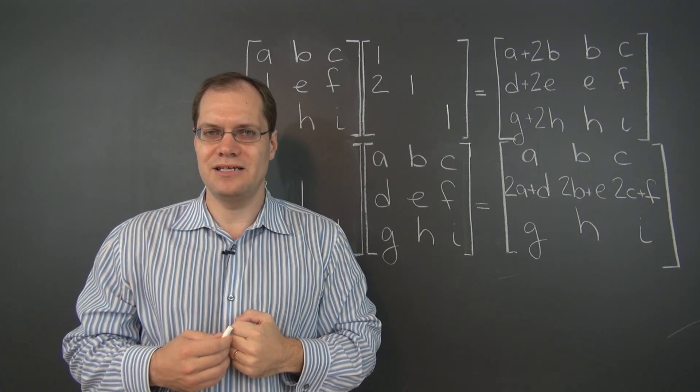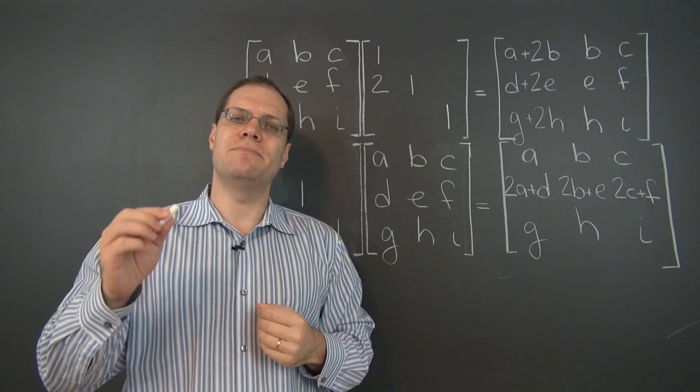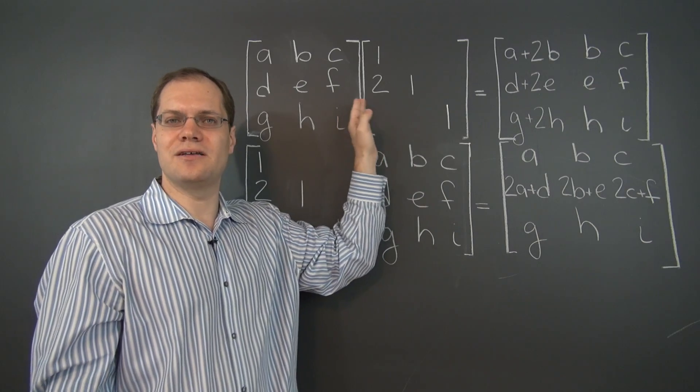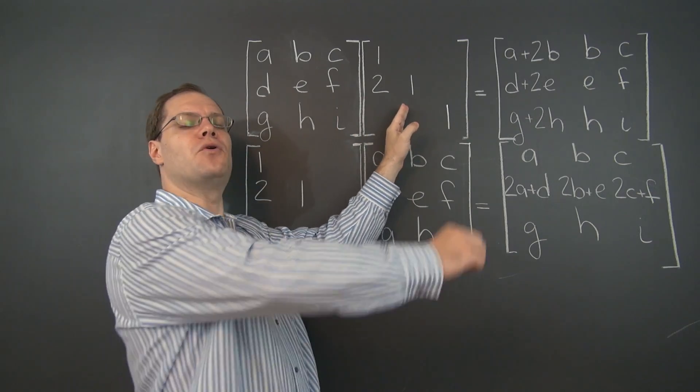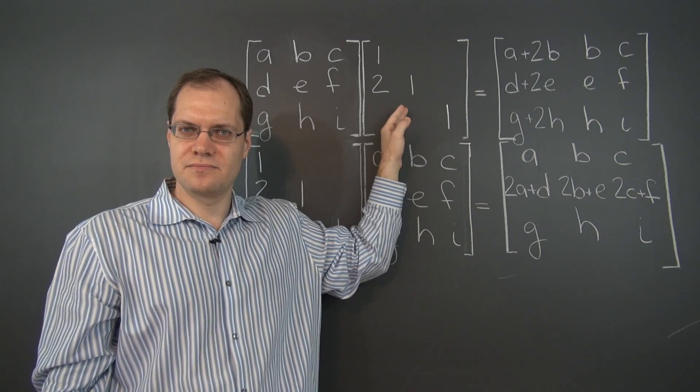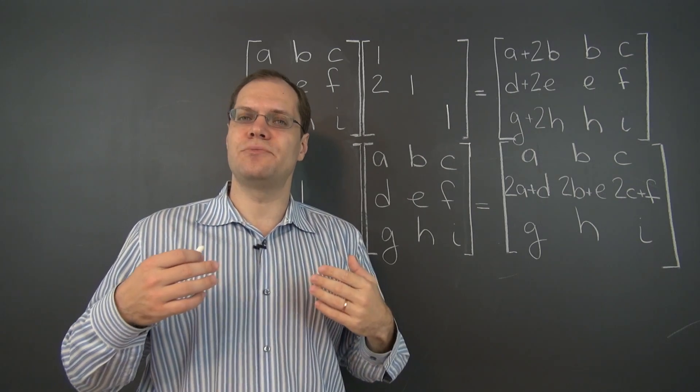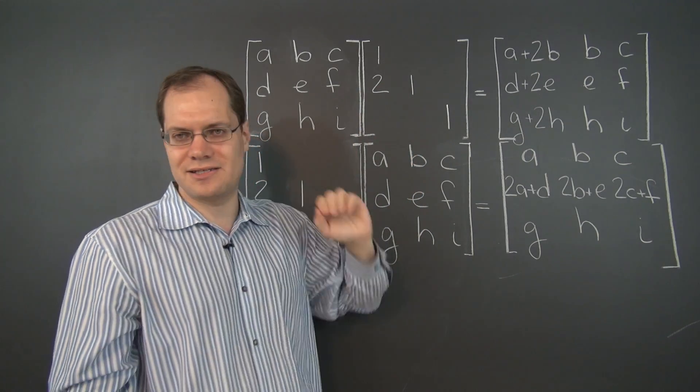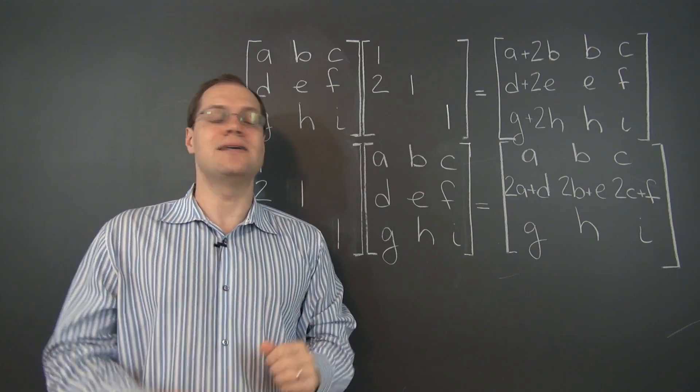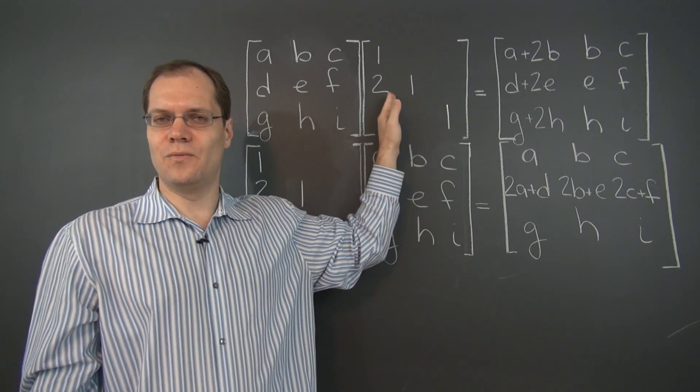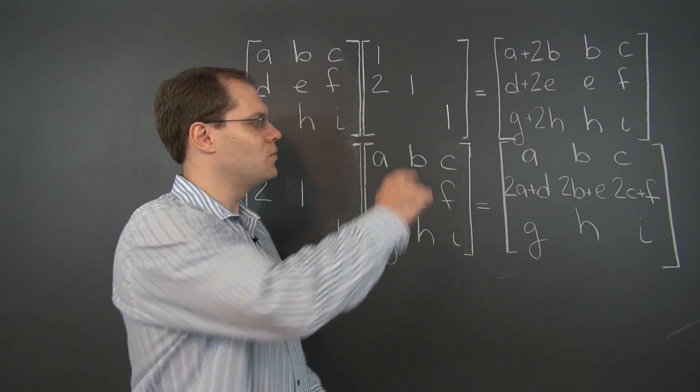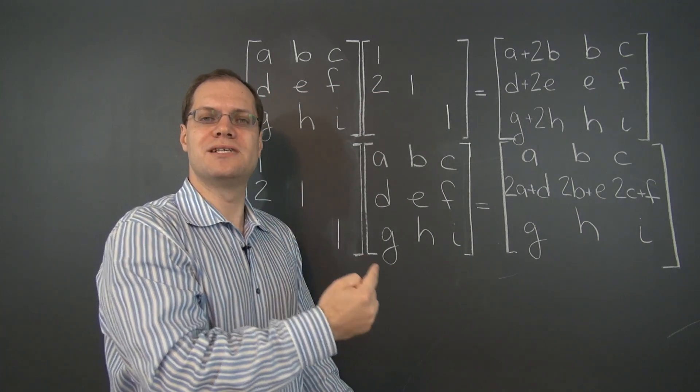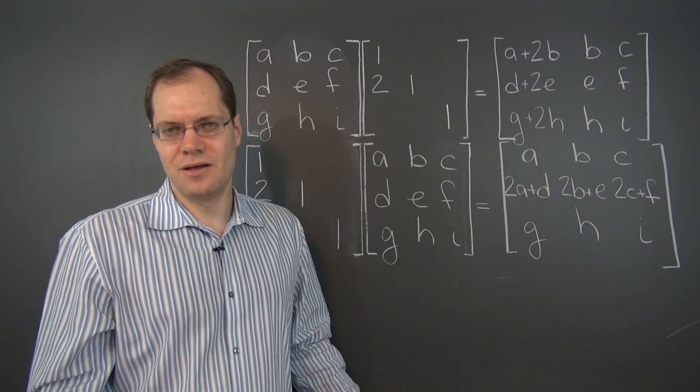And what this matrix does to this matrix is add 2 of column 2 to column 1. It's as if it stored that combination. That's what elementary matrices do to other matrices. When they appear on the right of the other matrix, they will perform the column operation on that matrix that needs to be performed on the identity to get this matrix. It's as if this matrix started as the identity, then someone added 2 of column 2 to column 1. And since then, whenever this matrix multiplies another matrix from the right, it performs that very operation on that matrix.